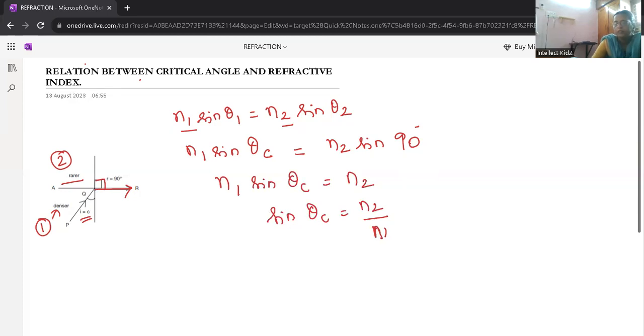So this is the relation between the critical angle. This is for boundary problems with critical angle. This is the refractive index of the medium. Medium 2 is refraction and medium 1 is incident. 1 is incident, 2 is refraction.